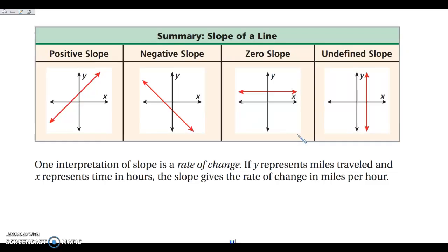One way that we can think about slope is rate of change — how far and how fast are you changing as you move forward. If we're doing miles traveled over time and interpret that in a real-world situation, that is miles per hour. Your slope of your graph is your rate of change.